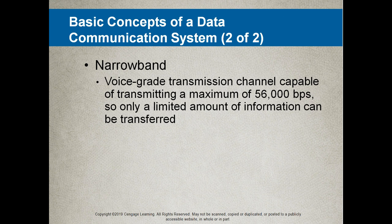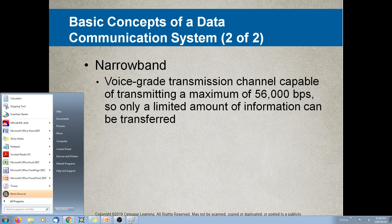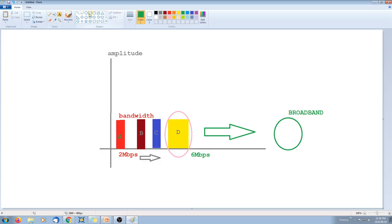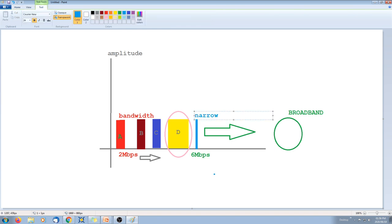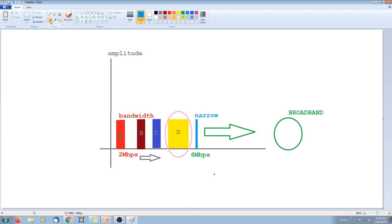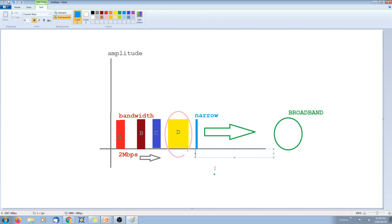Narrowband is a voice-grade transmission channel capable of transmitting a maximum of 56,000 bits per second, so only a limited amount of information can be transferred. Narrowband simply indicates that your bandwidth is very little. Going back to our drawing, narrowband would be a very small slice of the spectrum — a maximum of 56 kilobits per second — and this is known as a voice-grade channel.